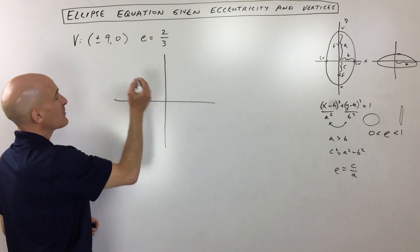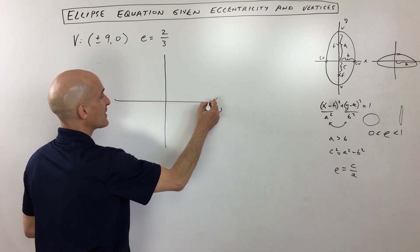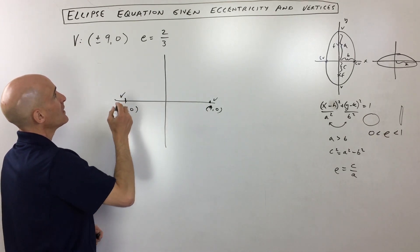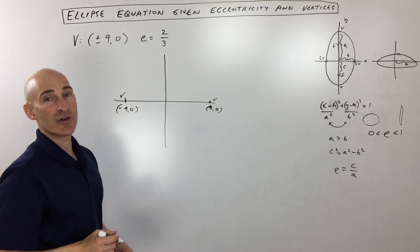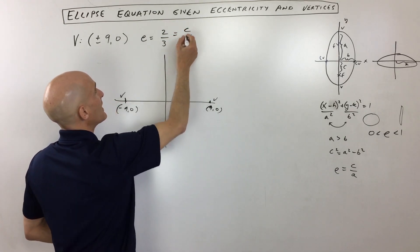So plus or minus nine, so we're going right nine. So I'll just write nine zero, so that's our vertex right there, and negative nine zero, that's our other vertex over here. And the eccentricity is two-thirds. Now remember, eccentricity is equal to c divided by a.